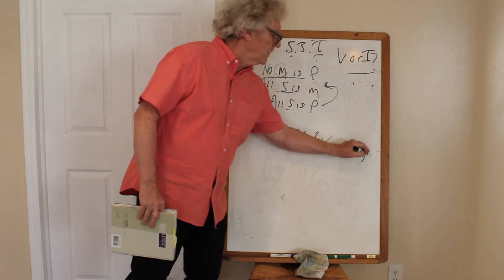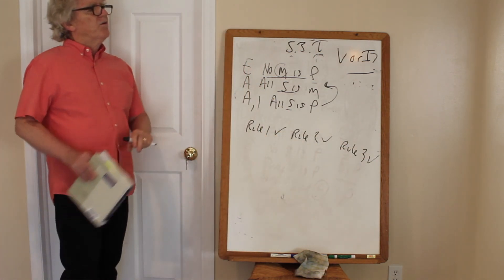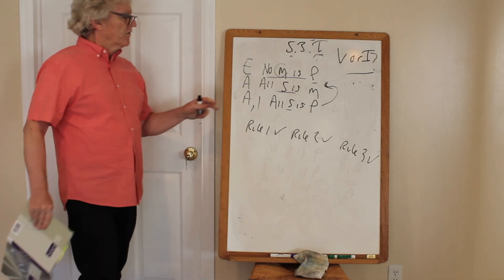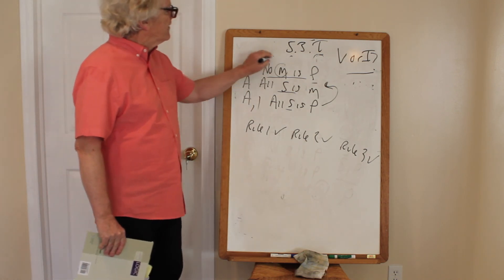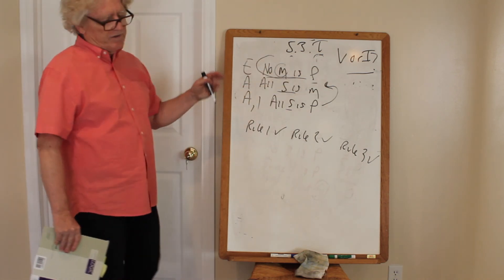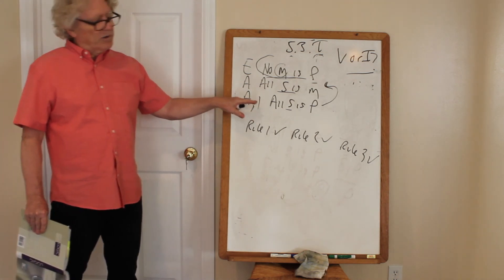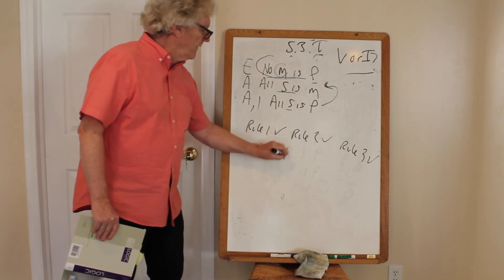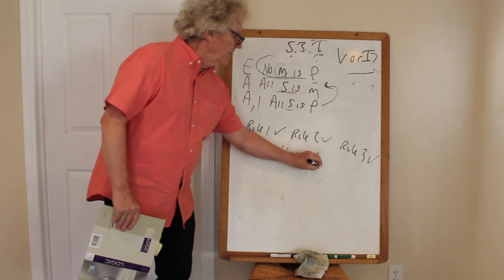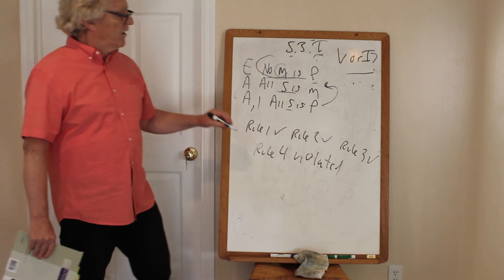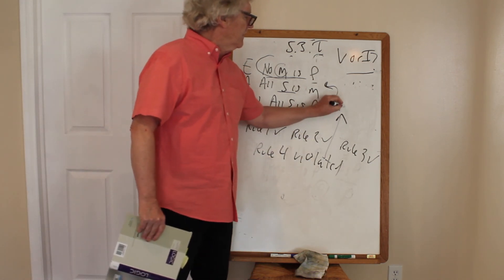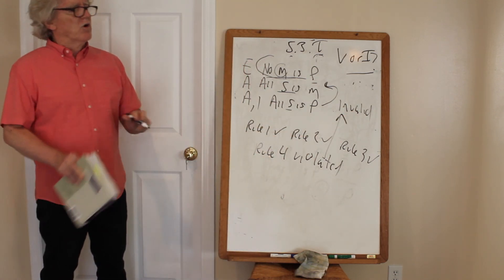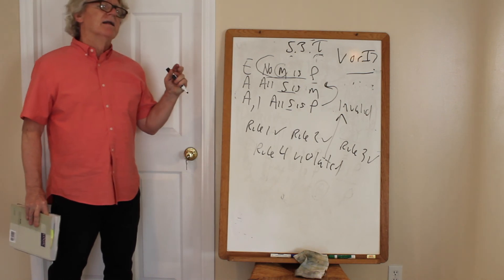Rule four says a negative premise requires a negative conclusion, and vice versa. We have a negative premise — no M is P, universal negative — but we do not have a negative conclusion; we have a universal affirmative conclusion. So rule four is violated, and since rule four is violated, this argument is invalid.